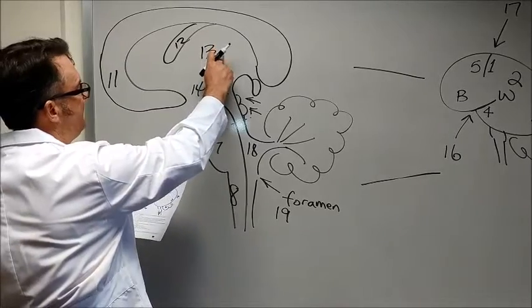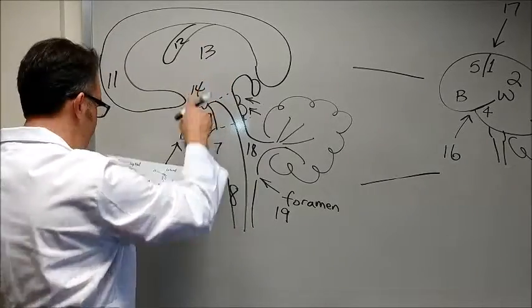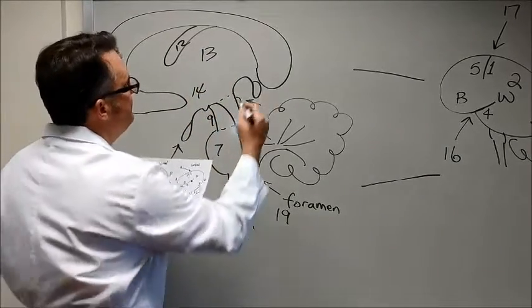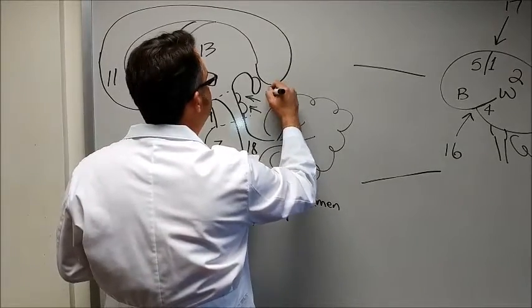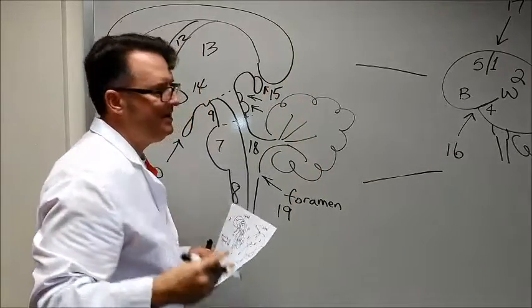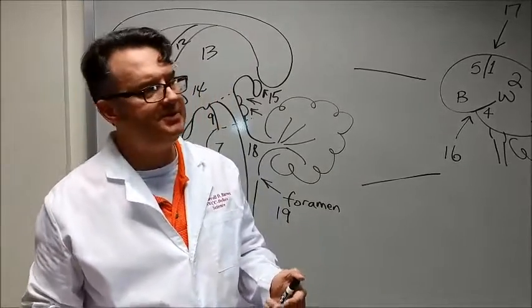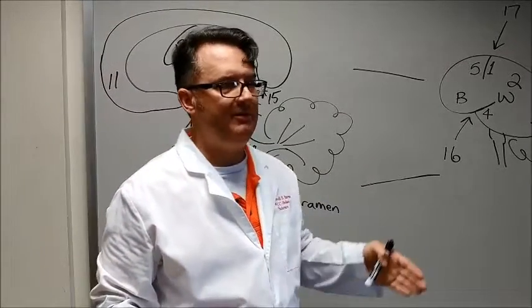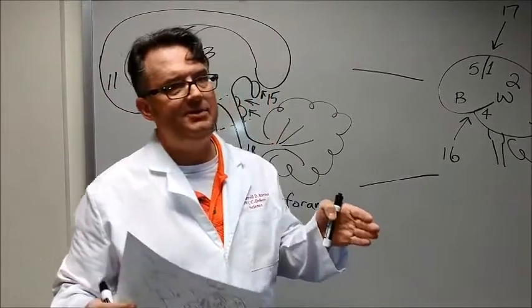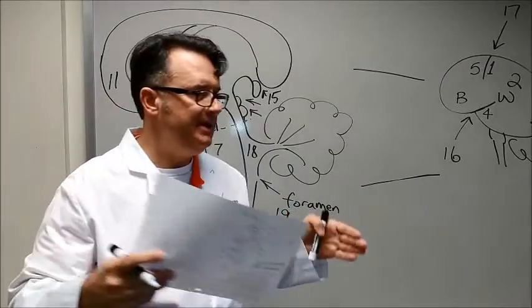So remember 13 is thalamus, 14 hypothalamus, 15 is the pineal gland and the pineal gland a lot of times looks like a little tadpole to me. It secretes melatonin. It has to do with sleep and wake cycles. It has to do with seasonal changes in critters.